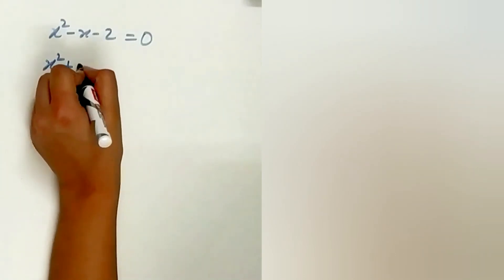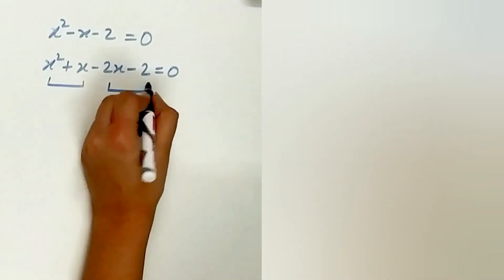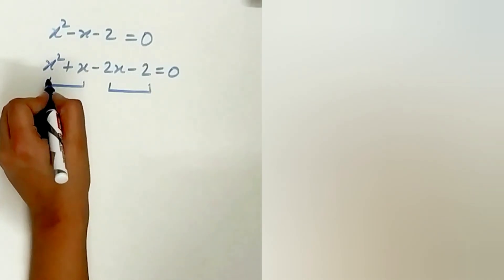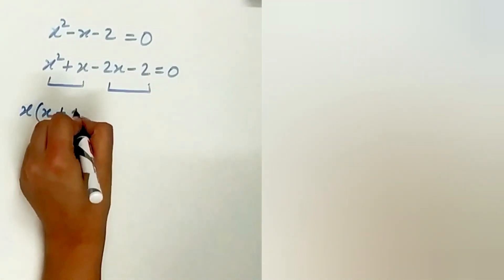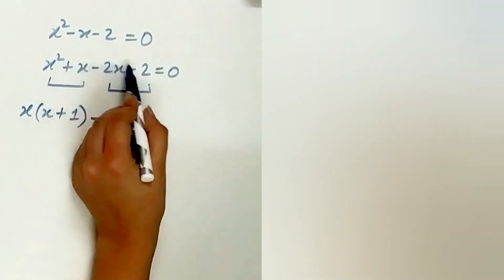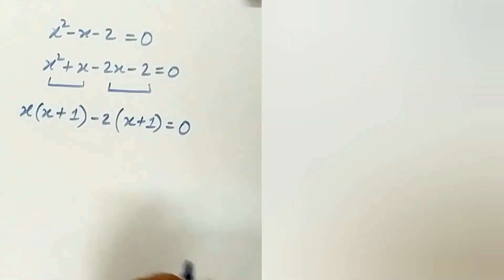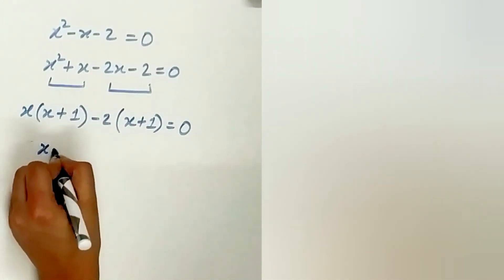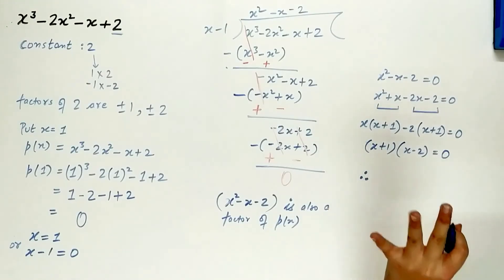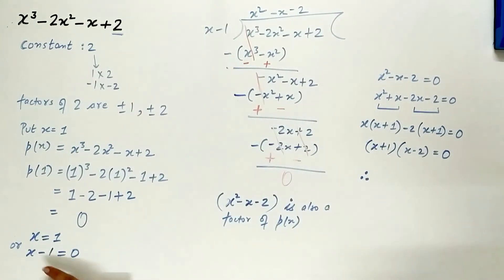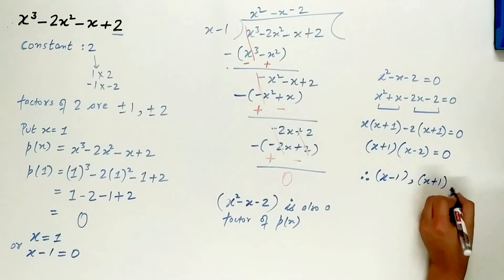So x square plus x minus 2x minus 2 equals 0. Group the first two and last two terms: x is common in x square and x, giving x times (x plus 1). Minus 2 is common in minus 2x and minus 2, giving minus 2 times (x plus 1). Since (x plus 1) is common, the remaining factor is (x minus 2). So the three factors of the cubic polynomial are (x minus 1), (x plus 1), and (x minus 2).